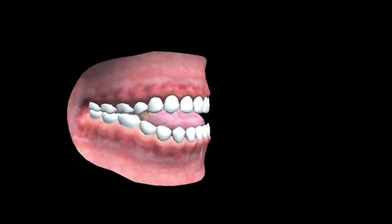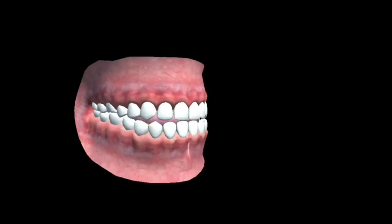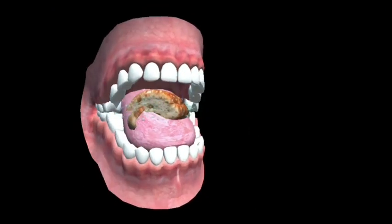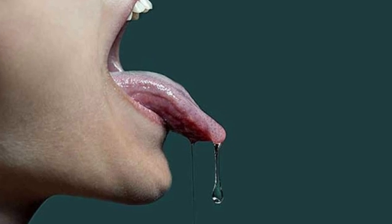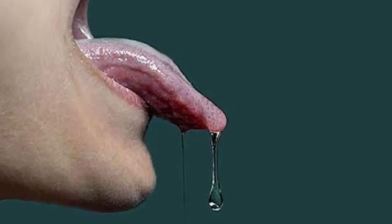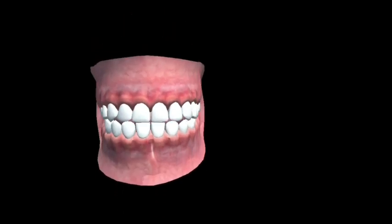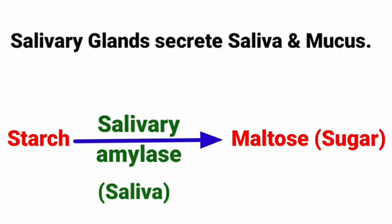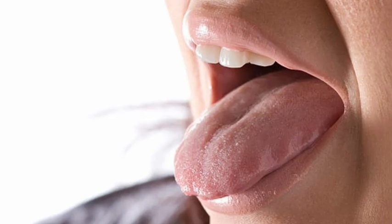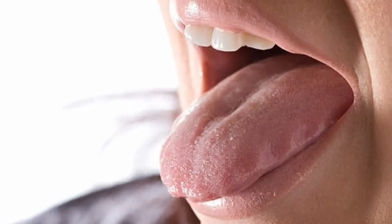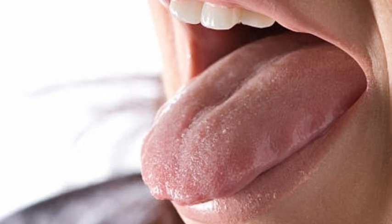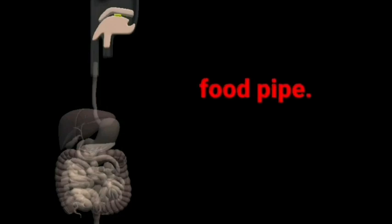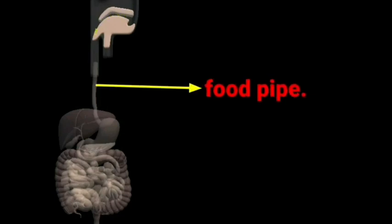The teeth present in the buccal cavity cut the food into small pieces by chewing and grinding it. Salivary glands secrete a watery liquid called saliva. This saliva contains digestive enzymes which help in the partial digestion of food — specifically, the partial digestion of starch. The tongue helps in mixing saliva with food.